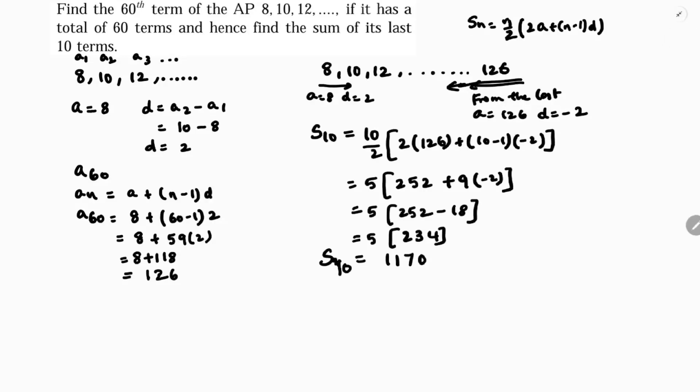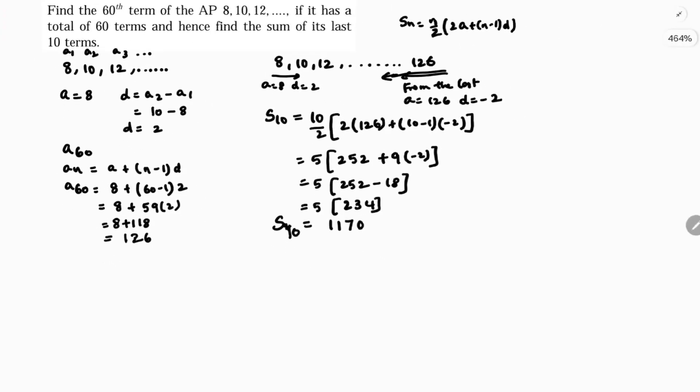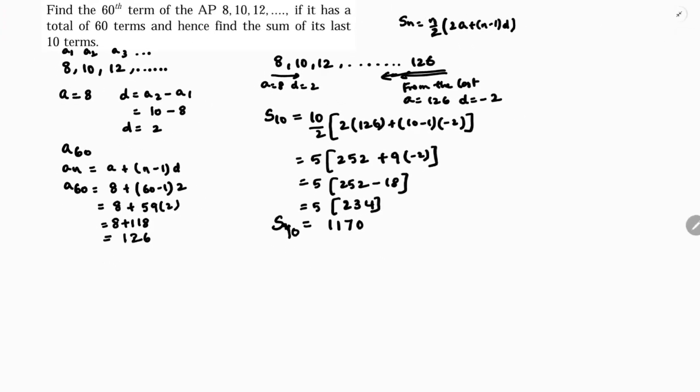You can solve this problem in a different way. See, we can calculate here total 60 terms. You can do S, you need to find sum of 51 terms to 60 terms. This you need to calculate because last 10 terms will be from 51 to 60. Here the first term is the 51st term. I will use the second formula: Sn is N by 2 into A plus L.